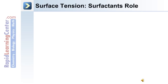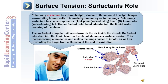Pulmonary surfactant is a phospholipid similar to those found in a lipid bilayer surrounding cells. It is made by pneumocytes in the lungs and has two components: a polar, water-loving head and a non-polar, water-fearing tail. The polar head absorbs into the liquid water covering of the alveoli, and the non-polar tail faces towards the air inside the alveoli. Surfactant absorbed into the liquid layer decreases surface tension, increases lung compliance, makes the lungs easier to inflate, and prevents the lungs from collapsing at the end of expiration.